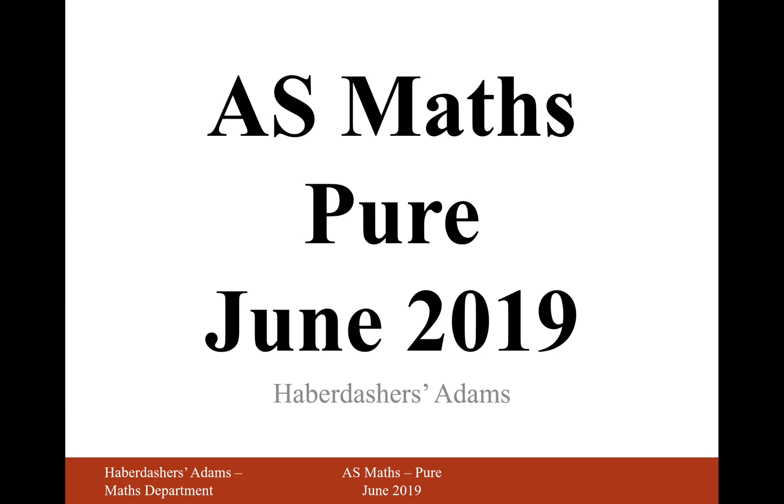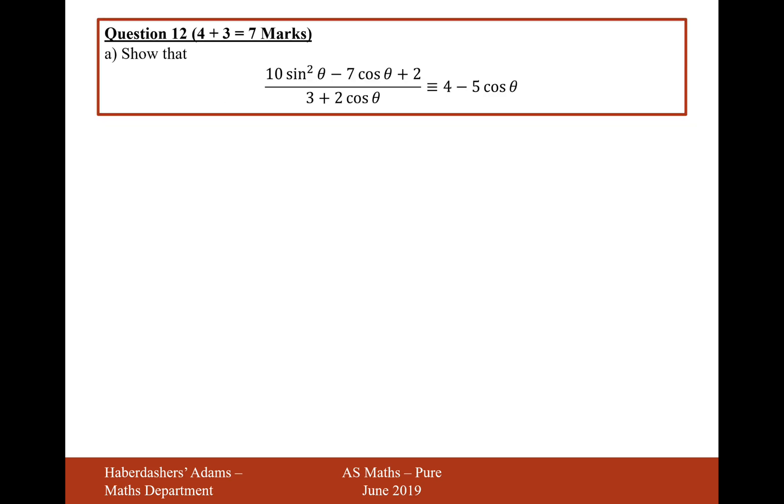Hello there, welcome to the June 2019 paper. Here we're looking at question 12. Show that 10 sine squared minus 7 cos theta plus 2 divided by 3 plus 2 cos theta is identical to this expression here.